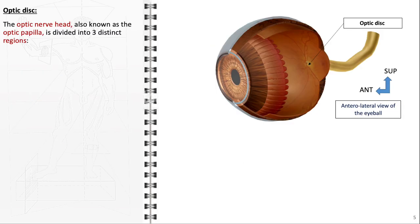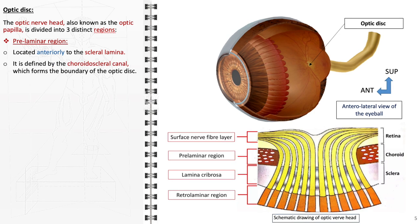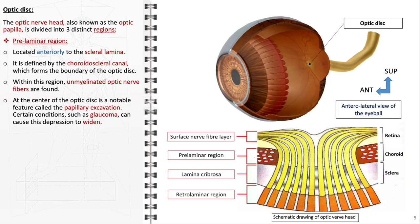The optic disc, or optic nerve head, is a notable feature in the retina where the optic nerve connects to the eye. Also referred to as the optic papilla, this area is divided into three anatomically distinct regions. The pre-laminar region, situated anteriorly to the scleral lamina, marks the beginning of the optic nerve head and is defined by the choroidoscleral canal forming the periphery of the optic disc. Here, the optic nerve fibers are unmyelinated, allowing direct observation through an ophthalmoscope. The papillary excavation, a central depression, is a key feature.